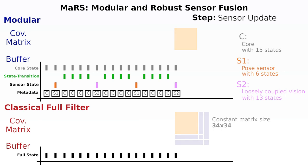This completes the sequence of initializing the core, initializing individual sensor states, updates of different sensors, and one covariance correction for the last update of Sensor 2. Please note that the core of the modular approach does not require any knowledge about the introduced sensors, which renders the modular approach highly flexible.